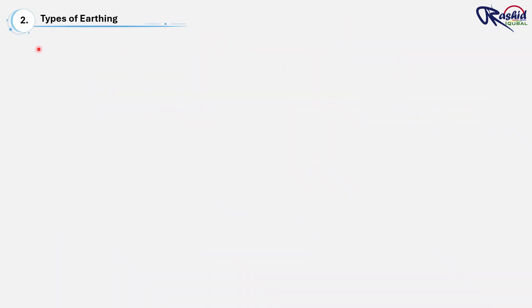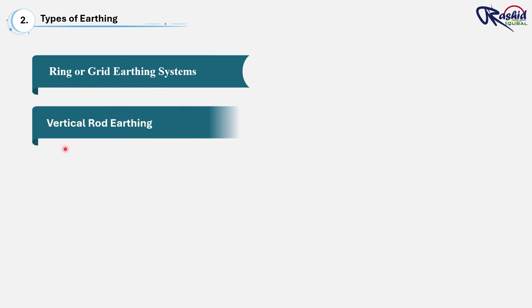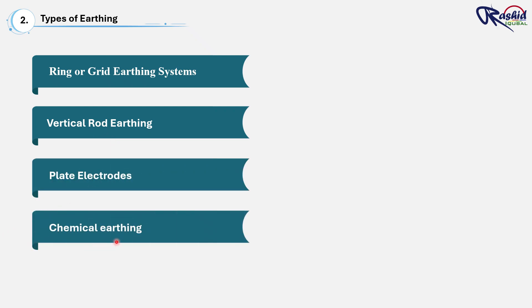In practice, three main types of earthing systems are commonly used. Number one: ring or grid earthing system. Number two: vertical rod earthing. Number three: plate electrode earthing. Four: chemical earthing. And pipe earthing. There are a lot of methods, but basically we are using these methods. In this video, we will focus on the two most commonly used methods for commercial and high-rise buildings: ring or grid earthing and vertical rod earthing. These two methods are preferred because they provide better reliability and lower resistance, making them ideal for large installations.